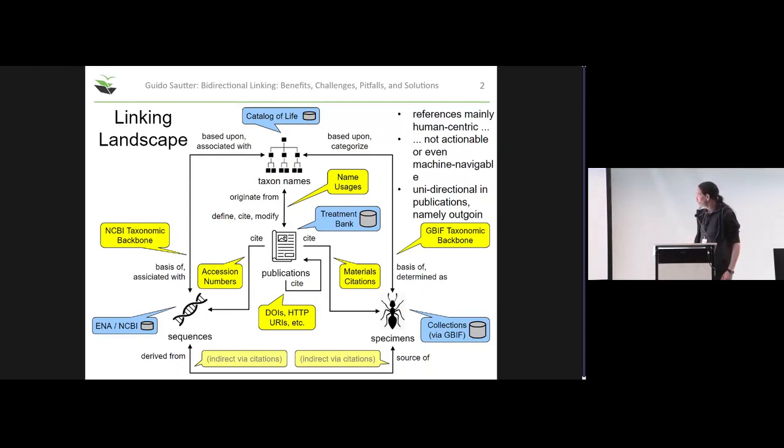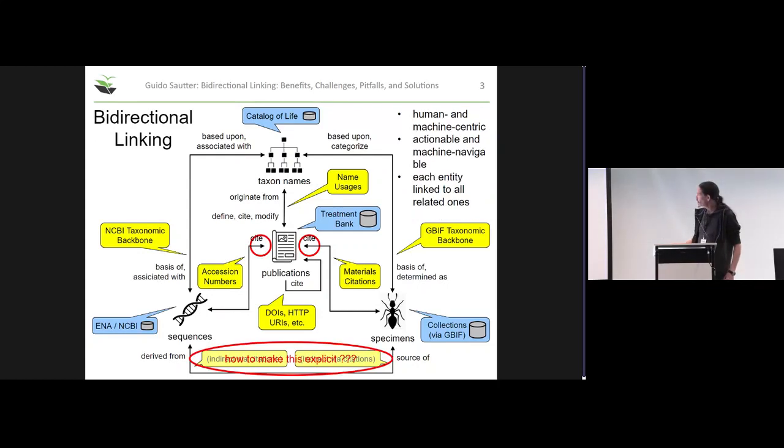Traditionally these are more human-oriented links and hardly ever machine-navigable and usually only outgoing in literature. To make this whole thing bidirectional, we have these three highlighted areas. Especially between sequences and specimens it gets a little complicated - the only thing linking the two together more often than not is the co-occurrence in tables, like a reference to the specimen and the respective accessions in some table in some publication.